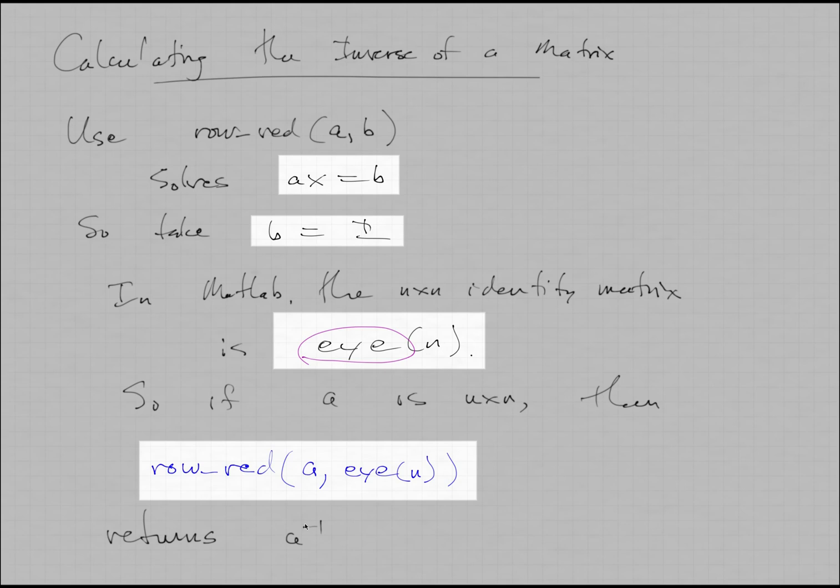Of course, if the inverse doesn't exist, which can happen, then this will return an error. I probably should have put some error code in my function to check whether the matrix turned out to be non-invertible, or the solution turned out to be non-solvable, then it would detect that and not just crash. But actually, I think it will just crash with an error, probably division by zero, if the inverse doesn't exist.